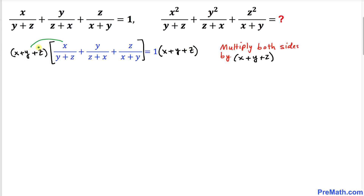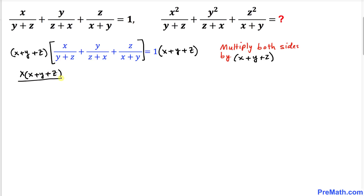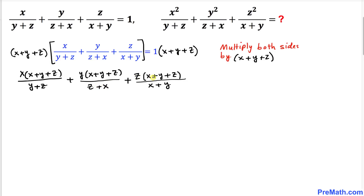Now we are going to distribute x plus y plus z across the board on the left hand side. So the left hand side can be written as x times x plus y plus z divided by y plus z, plus y times x plus y plus z divided by z plus x, plus z times x plus y plus z divided by x plus y, equals to one times x plus y plus z, which is the same as x plus y plus z.